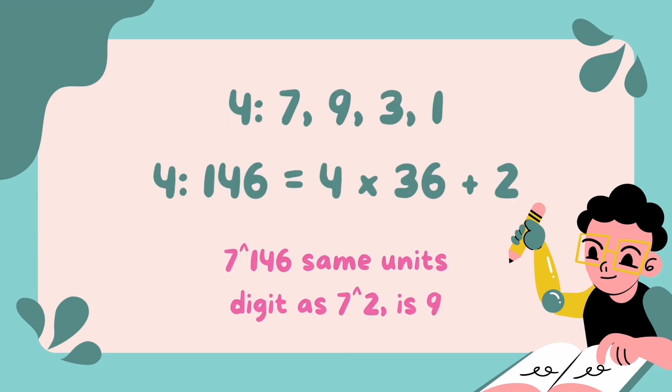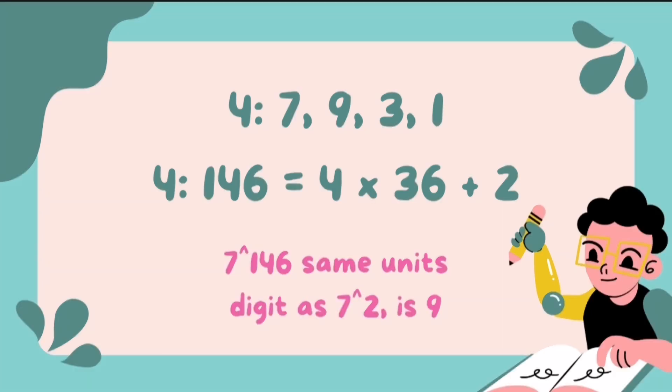We can see that the unit's digit repeat in a pattern of 4: 7, 9, 3, and 1. This means that the unit's digit of any power of 7 that is a multiple of 4 will be 1.